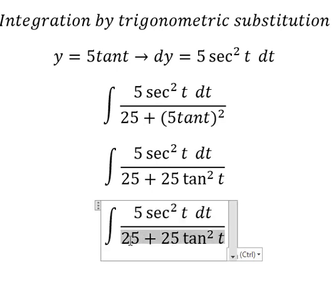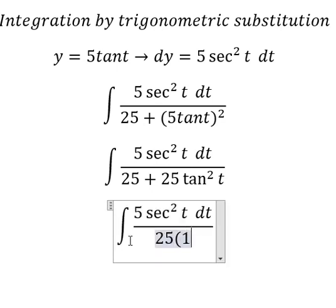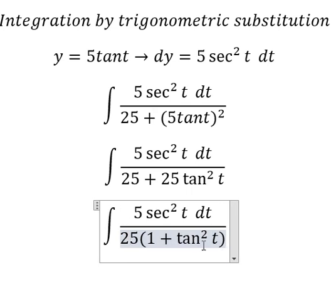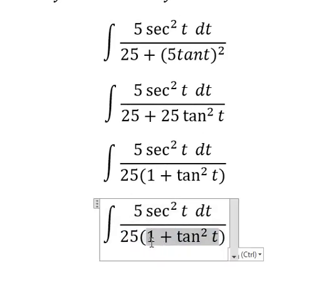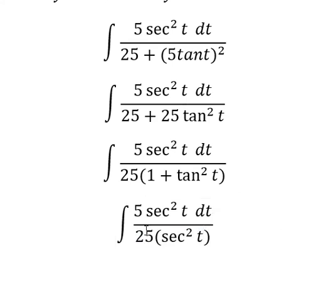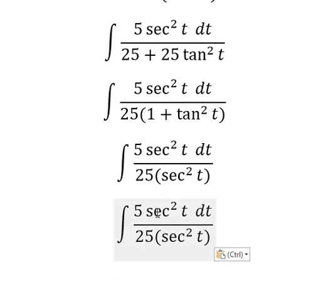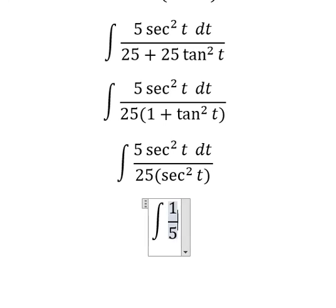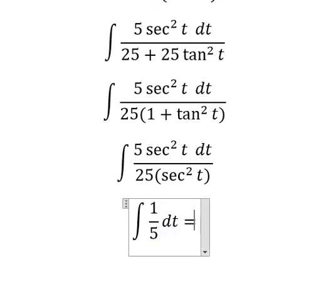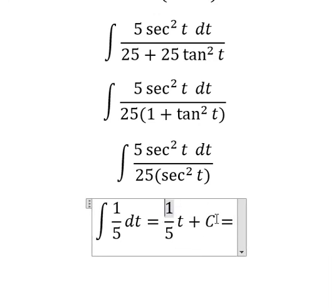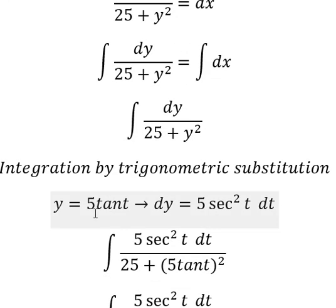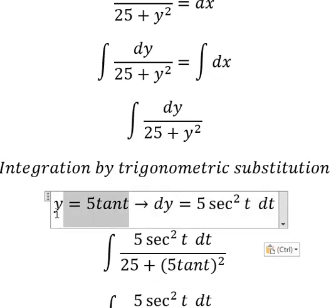We can do factorization. Now we need to simplify and you got 1 over 5 dt. The integration of dt, you got t and we put c. About t, that is this one, so we need to divide both sides by 5.